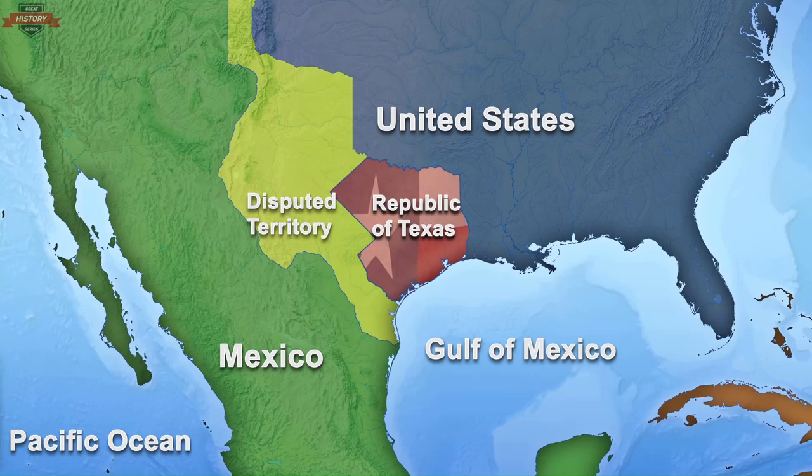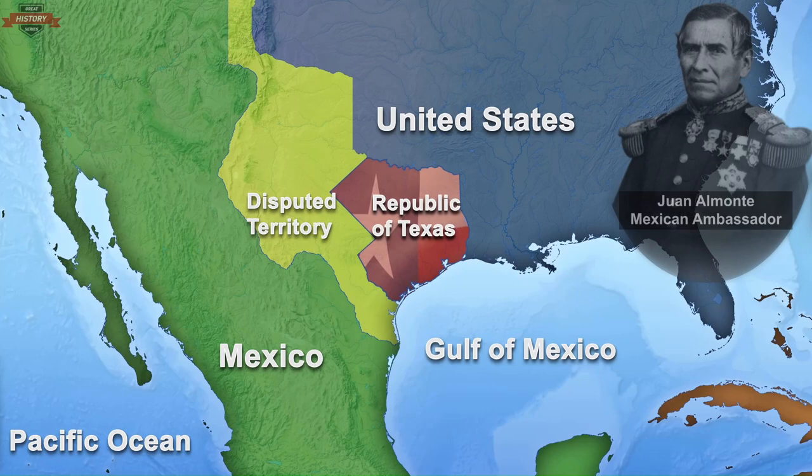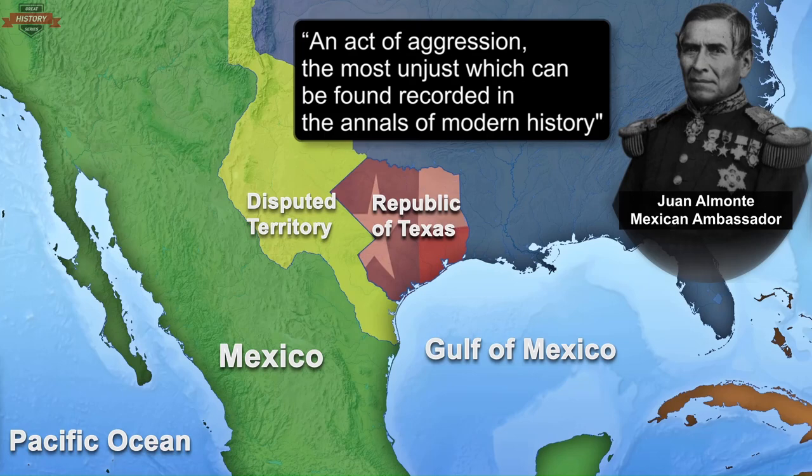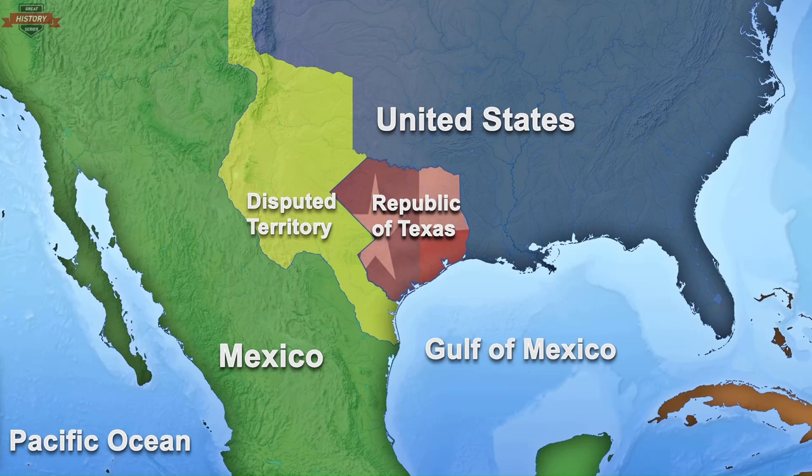Nine years later, in late February 1845, in a joint session, the United States Congress voted to annex Texas. When news reached the Mexican ambassador to Washington, Juan Almonte declared the annexation to be an act of aggression — the most unjust which can be found recorded in the annals of modern history. Almonte immediately demanded his passports, thus severing diplomatic relations between Mexico and the United States.